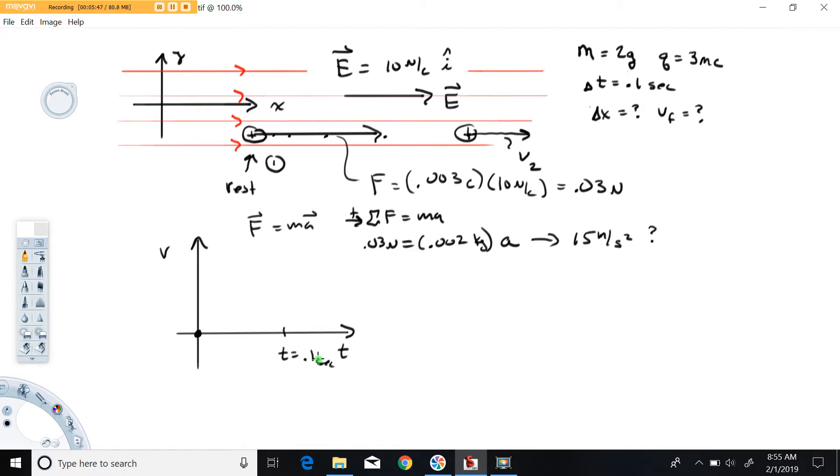0.1 seconds later, what we don't know is how fast it's moving, but we do know it's going to be moving to the right at some speed here. So I'm just going to put this on the graph: 0.1 and some velocity. Let's say I called that v final.